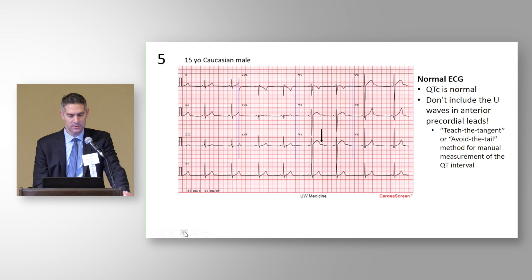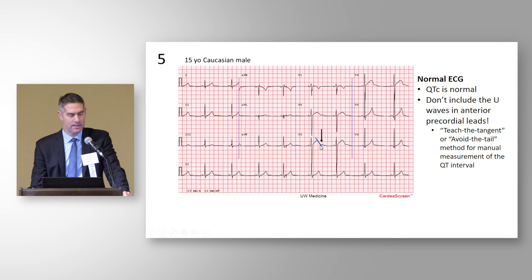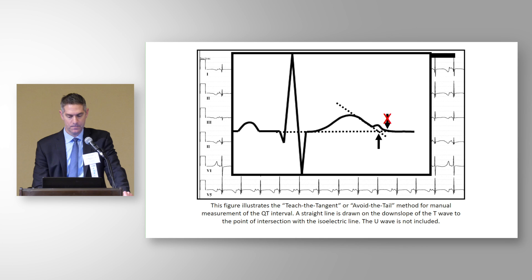Use the tangent or 'avoid the tail' method for manual QT interval measurement. If you have to use a lead that has a U wave, draw the tangent down the downslope of the T wave, and where that line intersects the isoelectric line is where you define the end of the T wave to calculate the QT interval — certainly not including the U wave.